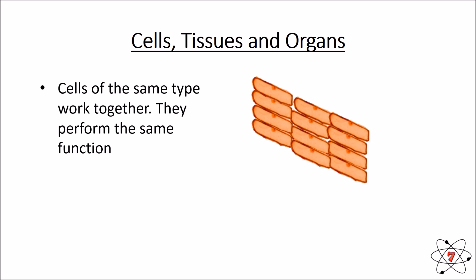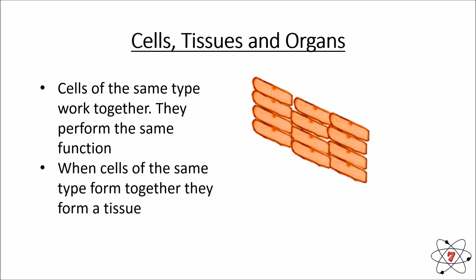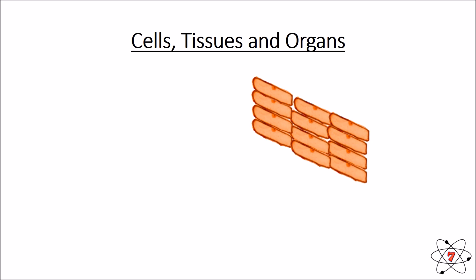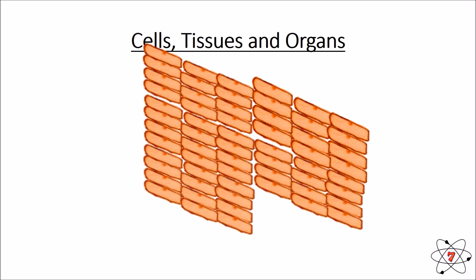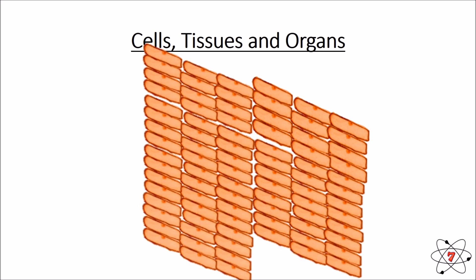When we get cells of the same type together, they always work together — they help each other and they perform the same function. When we put cells of the same type together, we call them tissues. Tissues are groups of the same type of cells working together.